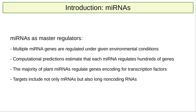Four factors determine that microRNAs are considered master regulators. The first one is that multiple microRNA genes are regulated under given environmental conditions. The second one is that computational prediction estimates that each microRNA regulates hundreds of genes. The third factor is that the majority of plant microRNAs regulate genes encoding for transcription factors. And the last one is that target genes include not only mRNA but also long non-coding RNAs.